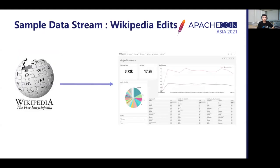Let us now discuss an open end-to-end stack using open source technologies and build a dashboard on top of streaming data. We will discuss the challenges involved and how each component of the stack addresses those challenges. As a sample problem, let us consider the Wikipedia edit stream. Whenever any page is edited on Wikipedia, an edit event is generated which contains details about which page was edited, when it was edited, which IP address it was edited from, and whether the page was edited by a human user or a bot.